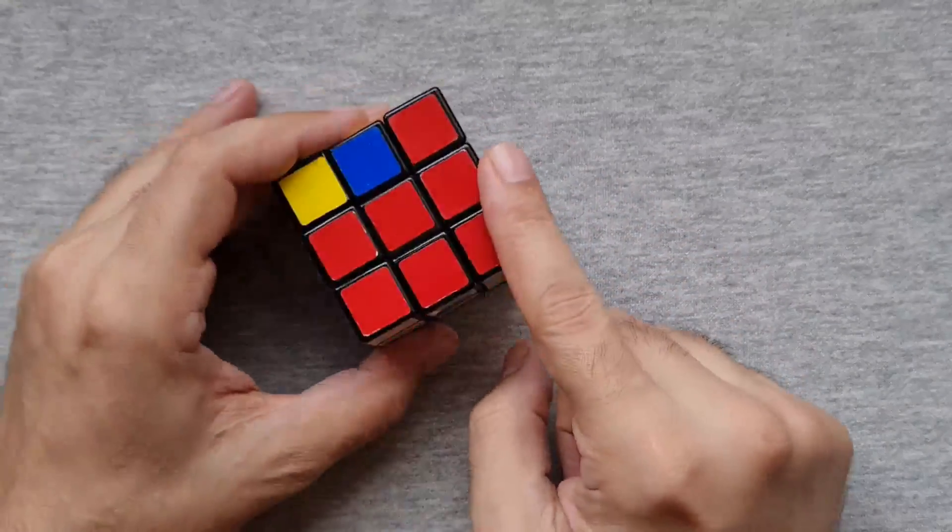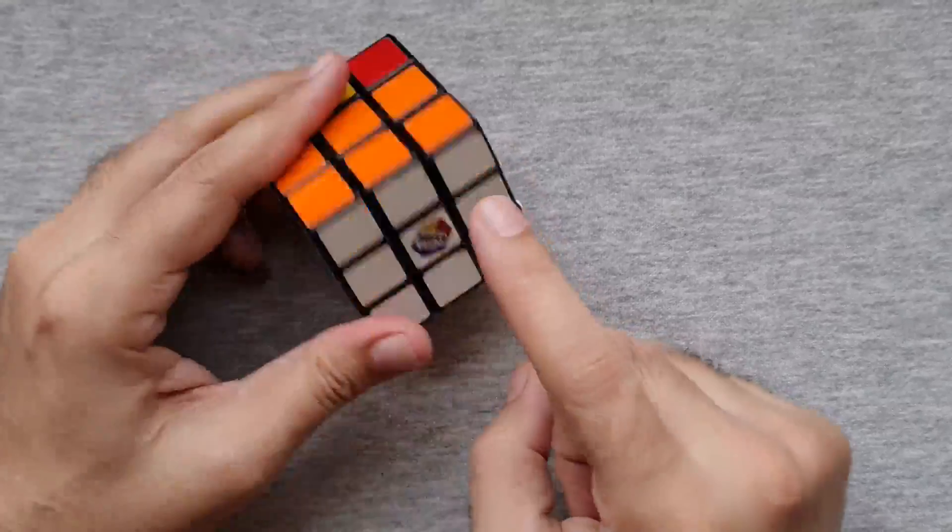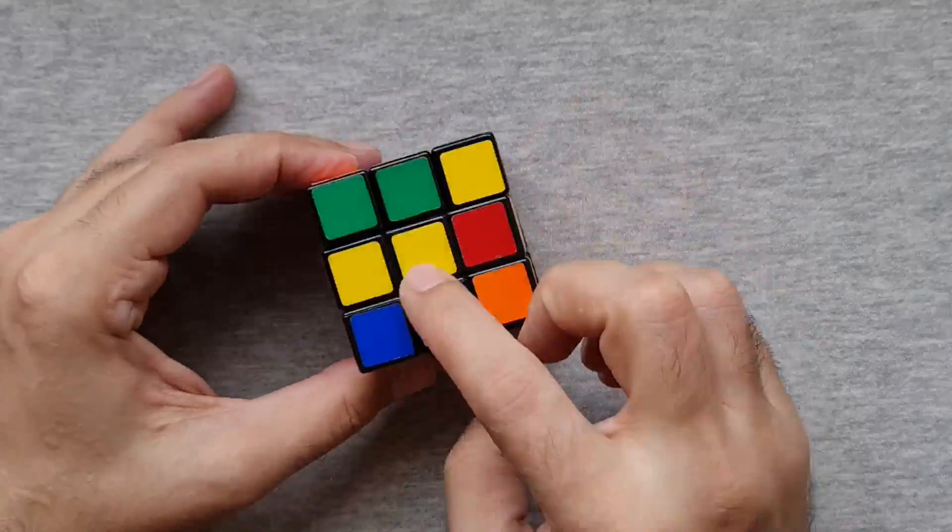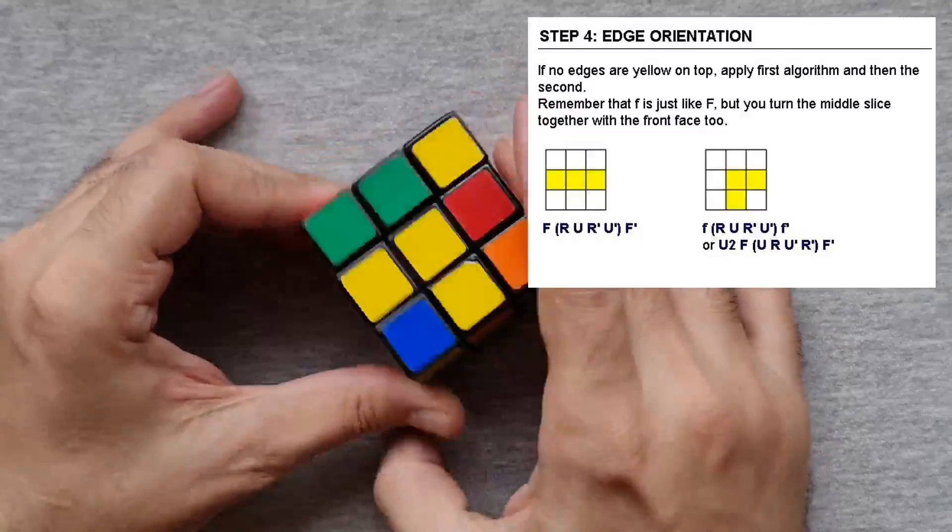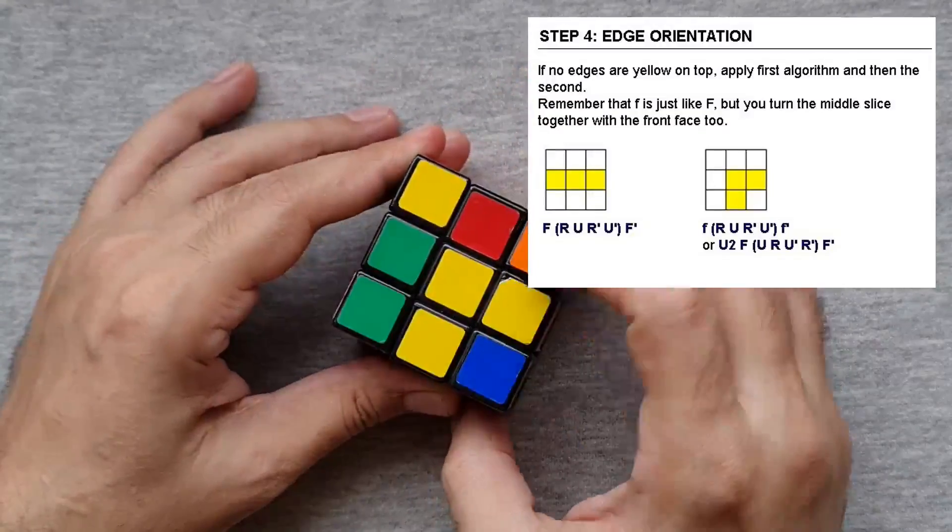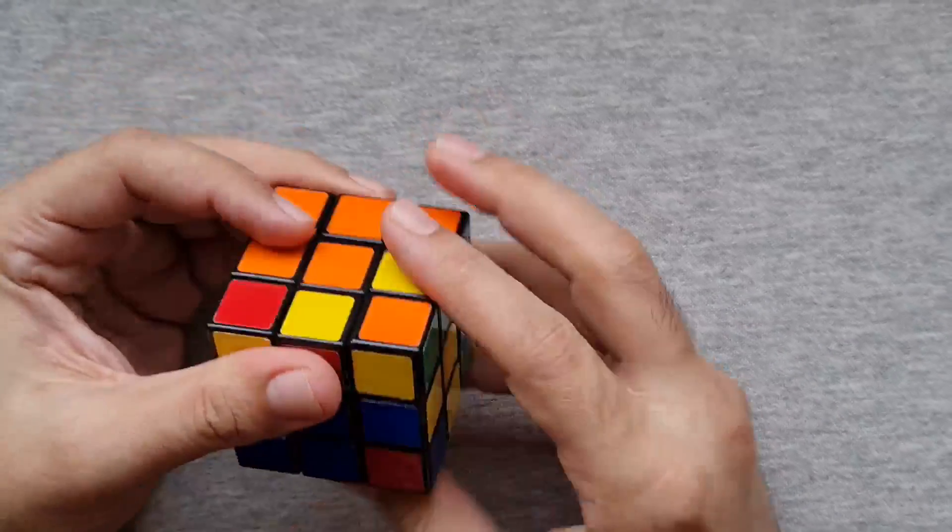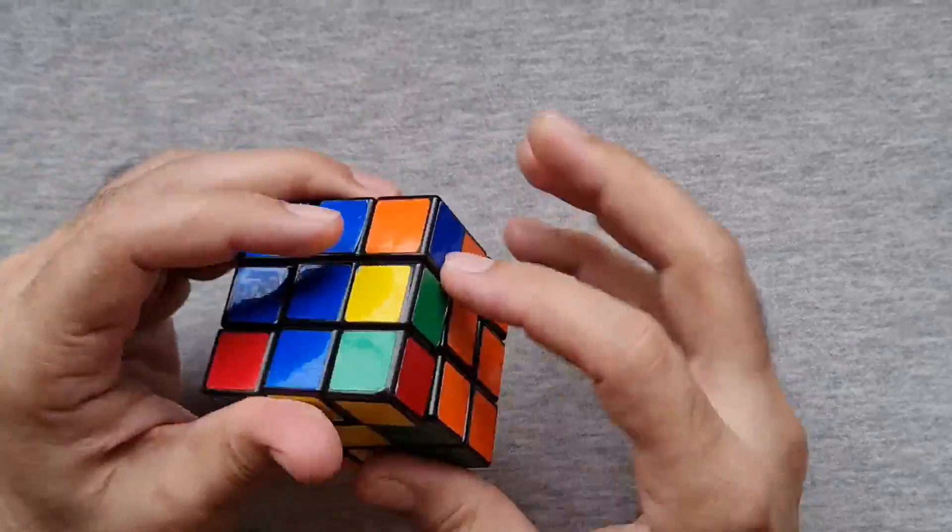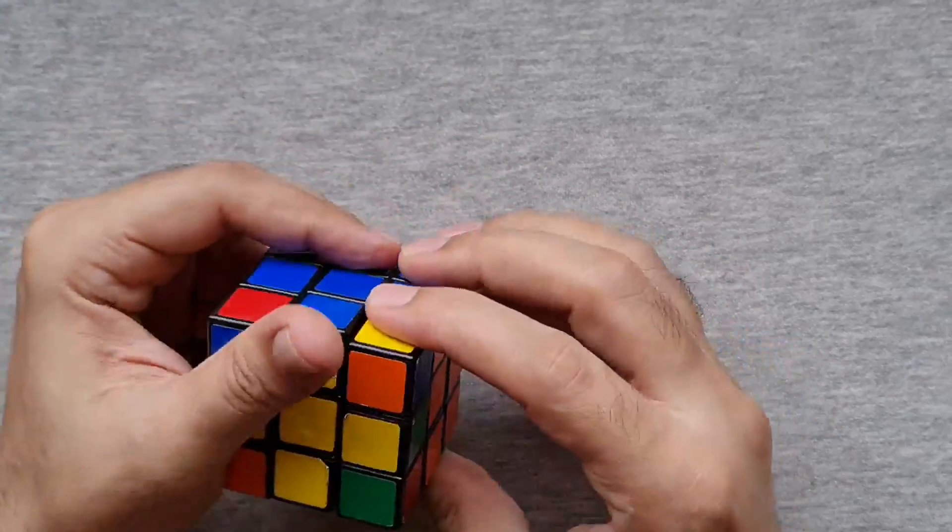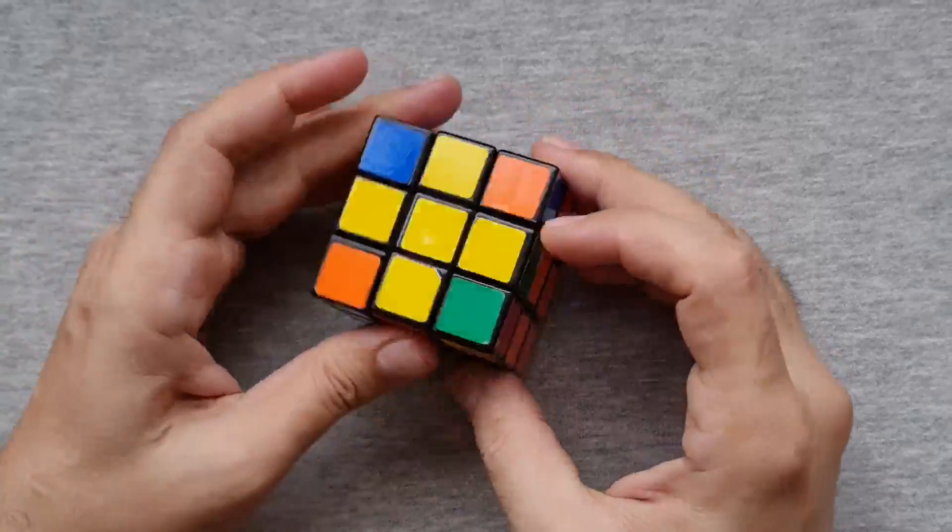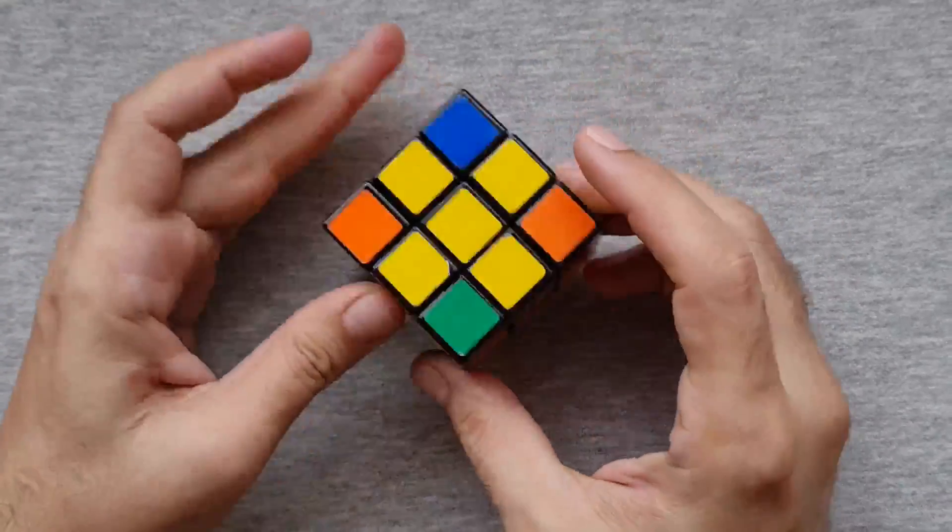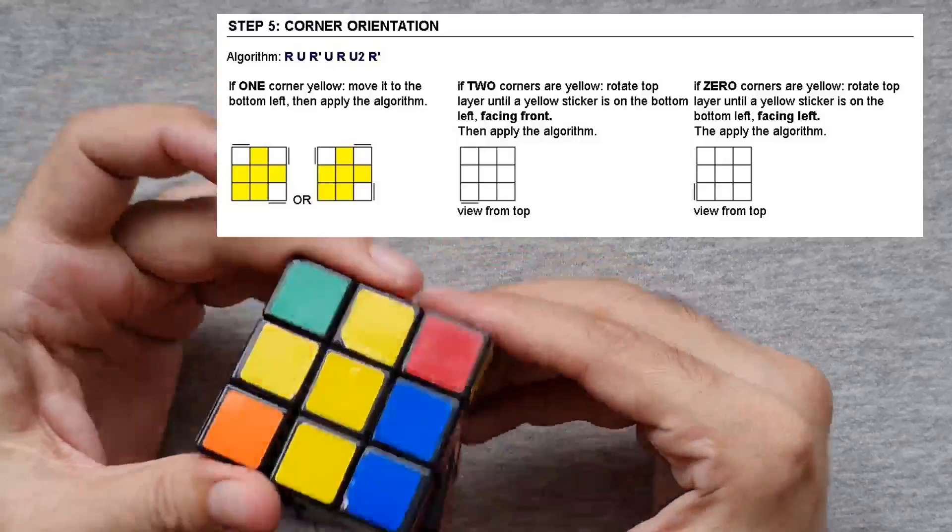So you can see that these are done and the white is still there. Now it's the top part that we need to do—the yellow. We're going to first make a plus sign here, so let's go. Okay, that was easy. Now we're going to fill out these four corners.